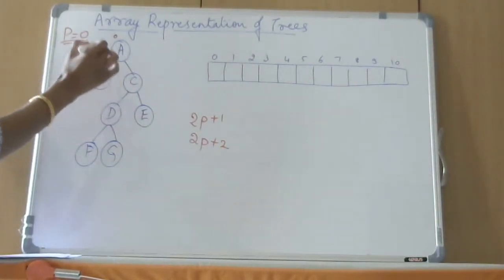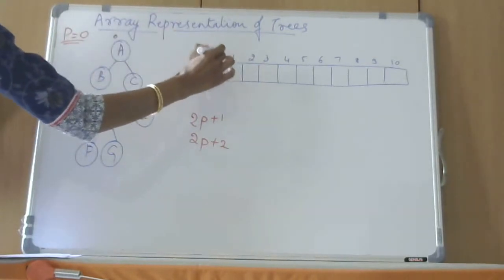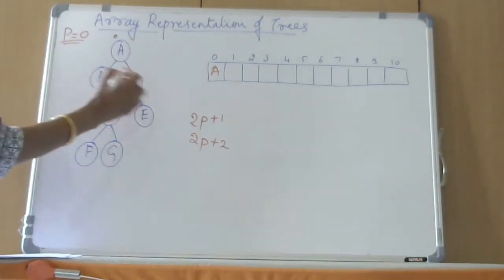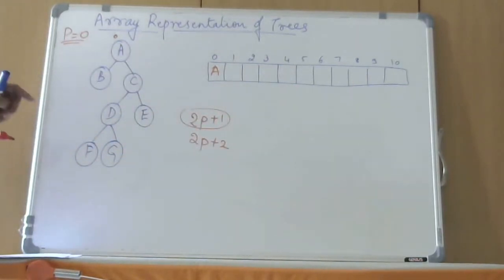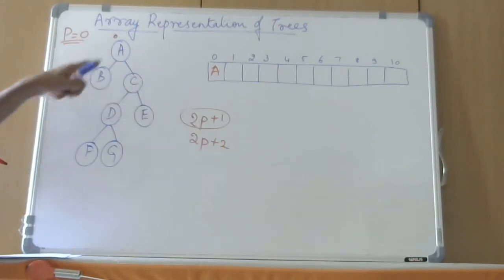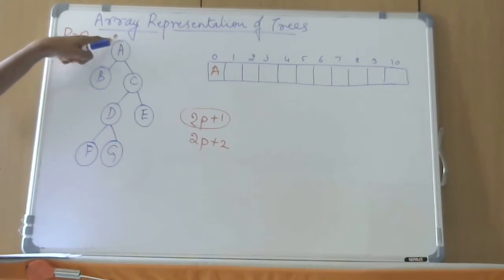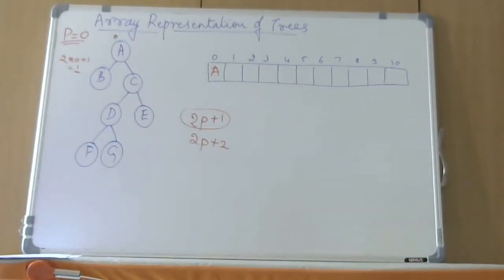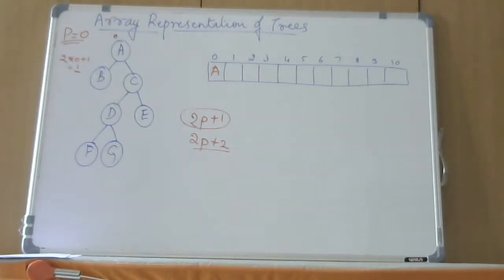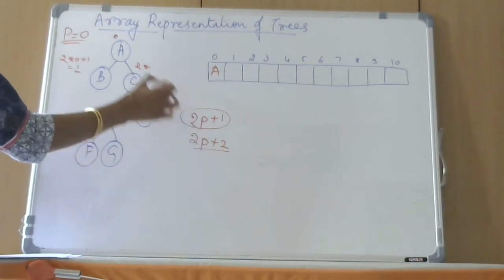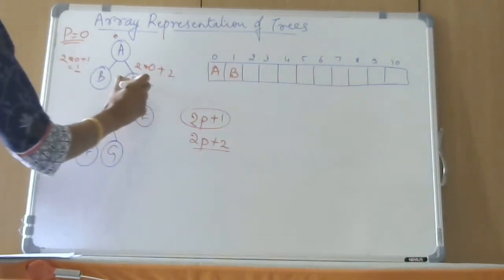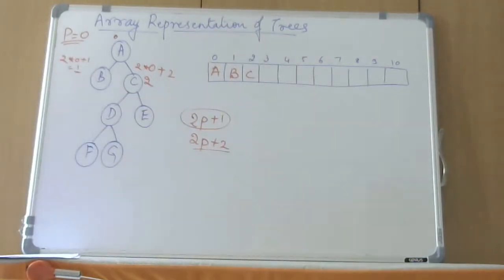What location should B and C occupy? The root node is always at 0. B is the left child, so left child is given by 2p plus 1. The parent node of B is A, which is at position 0. So this will be 2 times 0 plus 1, which is 1. C is the right child, calculated as 2p plus 2, where p is 0, so 2 times 0 plus 2 equals 2. So B goes to position 1, and C goes to position 2.